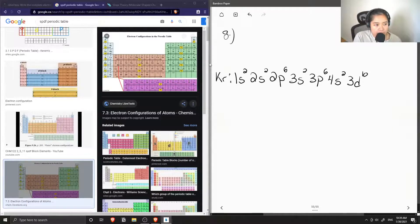and then we move across to 4p, and krypton is at the very end, so we write 4p6.